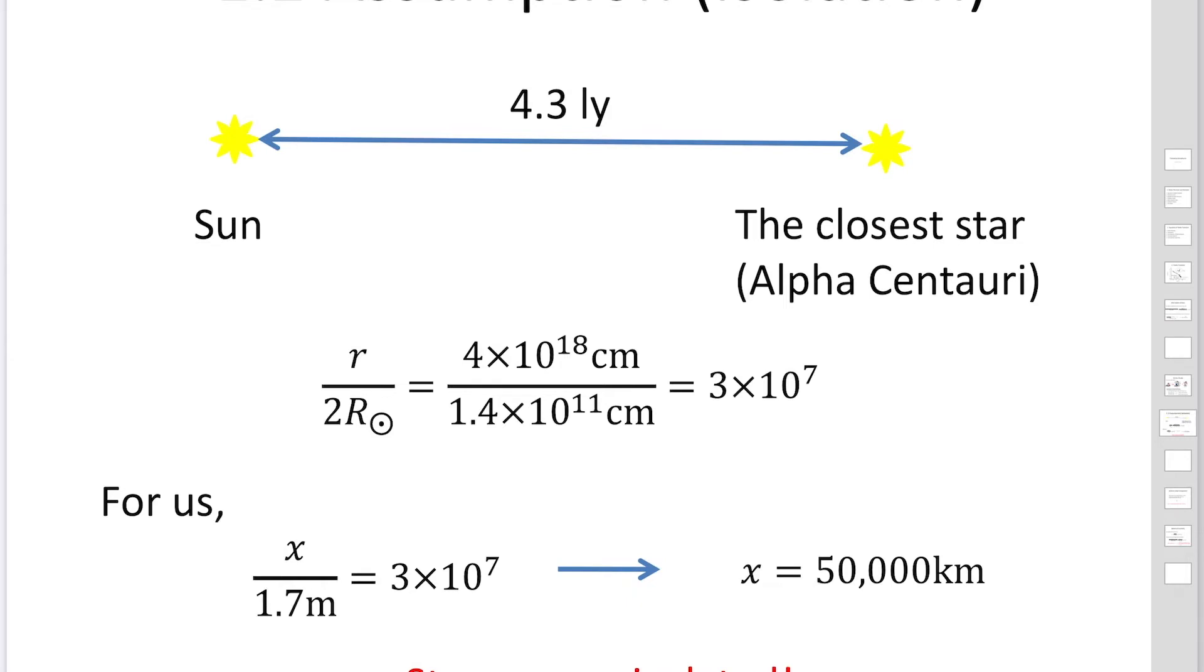If you find the closest star to our sun, the closest star is Alpha Centauri. Alpha Centauri is located 4.3 light years away from us. If we compare the distance to Alpha Centauri, 4.3 light years, and 2R, the diameter of the sun, the ratio becomes 3 times 10 to 7, 30 million.